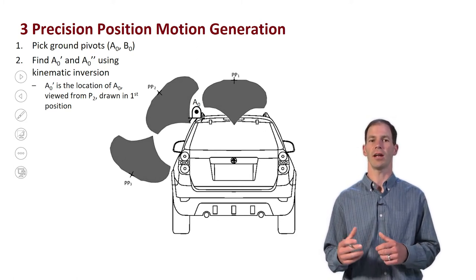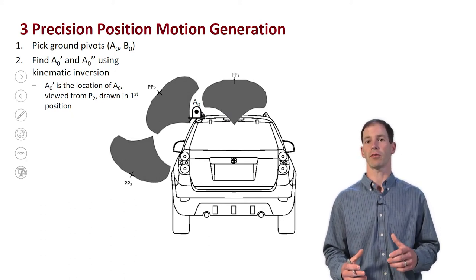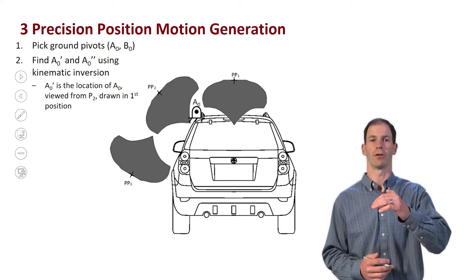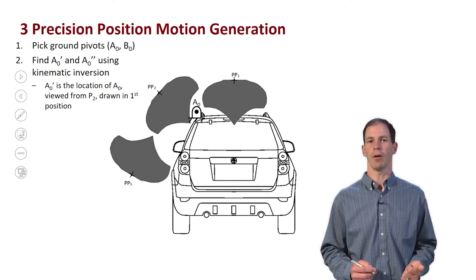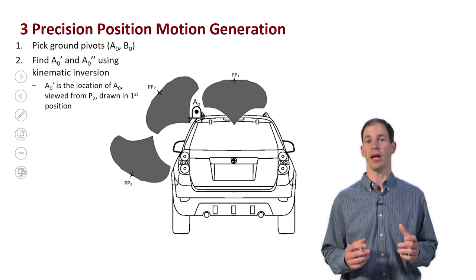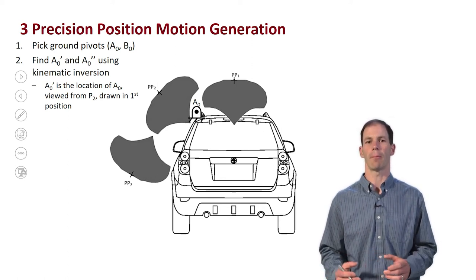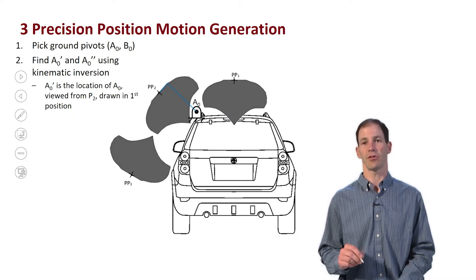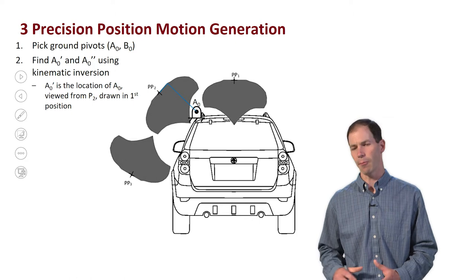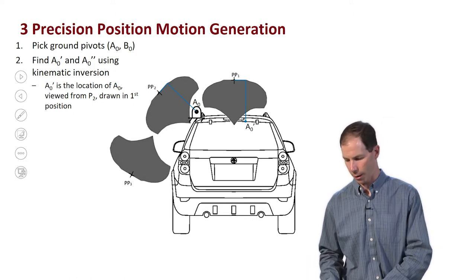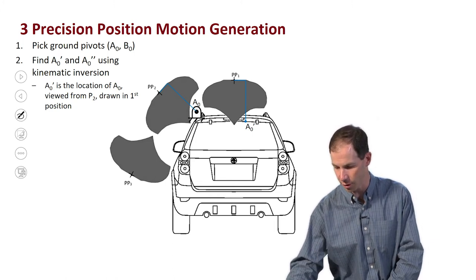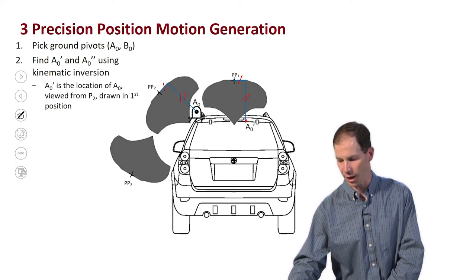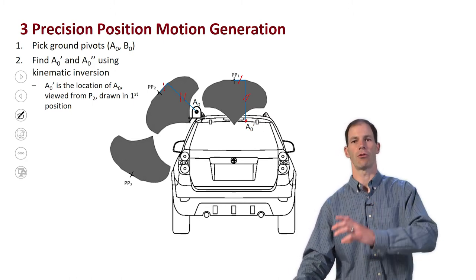Now I want to find what we call A-knot prime and A-knot double prime, which are kinematic inversions where we're holding the kayak fixed and looking at how the frame of the vehicle moves relative to it. A-knot prime is the location of A-knot — my ground pivot — when we're viewing it from the second position, but brought back and drawn in the first position. I've drawn two lines from position 2 back to A-knot, with one dash through the shorter line and two dashes through the longer line, and that defines A-knot prime.